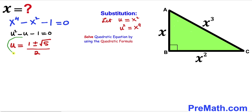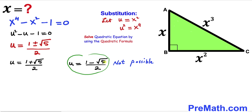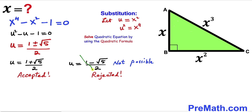We separate the two solutions: u equals (1 plus square root of 5) divided by 2, and u equals (1 minus square root of 5) divided by 2. The second value is less than zero, which is not feasible since u equals x squared must be non-negative. So we reject that value and accept u equals (1 plus square root of 5) divided by 2.